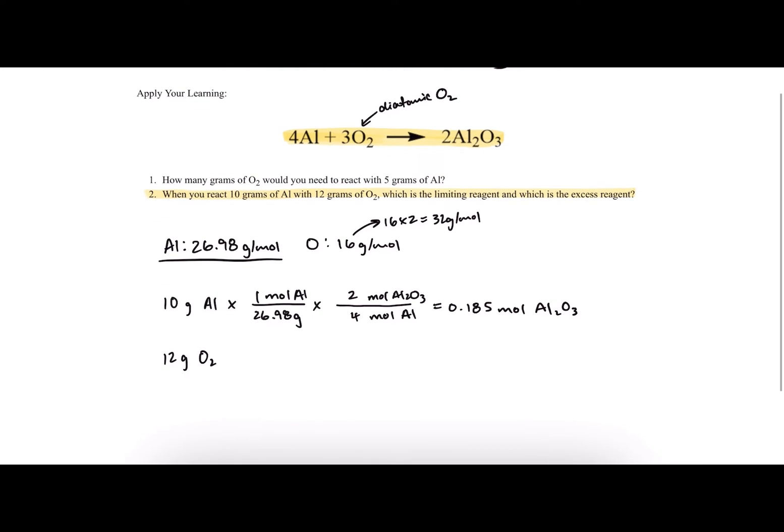Now let's follow the same process with the other reagent, diatomic oxygen. Starting with 12 grams of O₂, we convert to moles. Remember that for diatomic oxygen, you need to multiply the normal molar mass by 2, so we use 32 grams per mole.